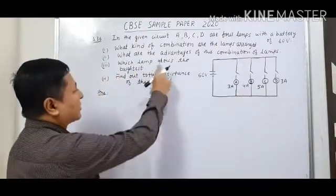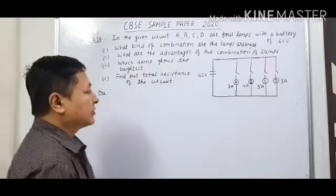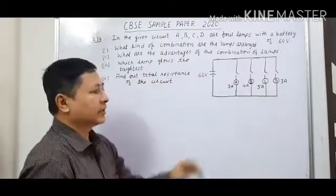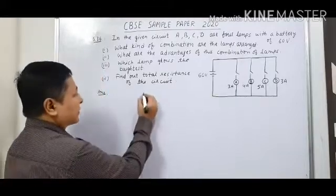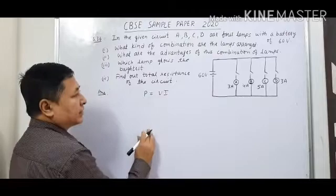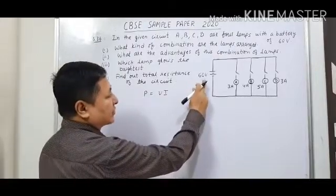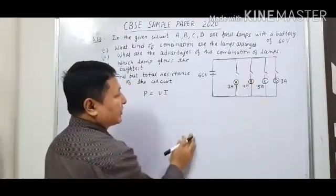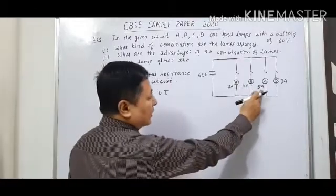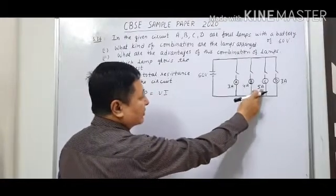The third question is: which lamp glows the brightest? The lamp with the highest power will glow brightest. We use the formula P = VI. Since the potential difference is 60 volt for each lamp, the lamp with the highest current will glow brightest. Lamp C has the highest current of 5 ampere, so it will glow brightest.